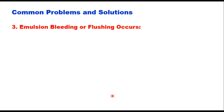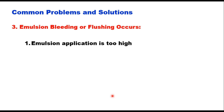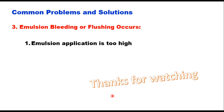When streaking occurs, check all these factors and correct the problem in the field. The third problem is emulsion bleeding or flushing, which occurs when emulsion application rate is too high. These are some of the precautions that can be taken at site. Thank you very much for watching this video; if you have any doubt, you can write in the comment box.